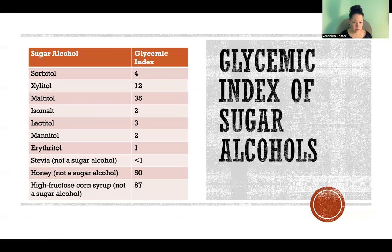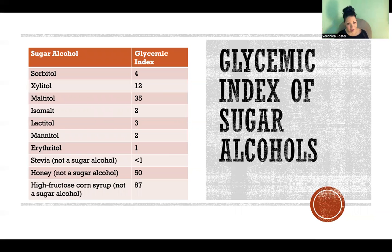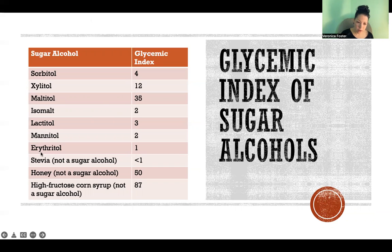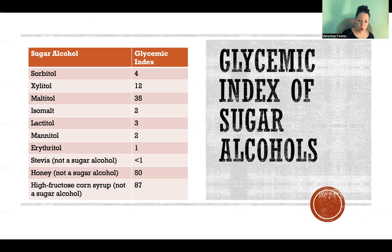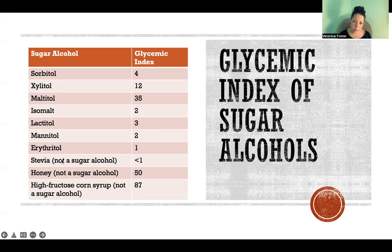Glycemic index tells us how much something that we eat affects our blood glucose. Closer to zero means a lower effect on blood glucose, and closer to 100 means a very high and extreme effect on blood glucose. Here I've listed those same sugar alcohols — some of the most common — and for comparison, a few other sweeteners at the bottom to give some context. Basically, closer to zero is better. Most of these sugar alcohols are one, two, three, or four on the glycemic index, which is extremely low.